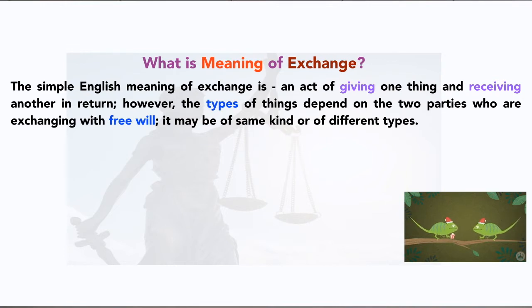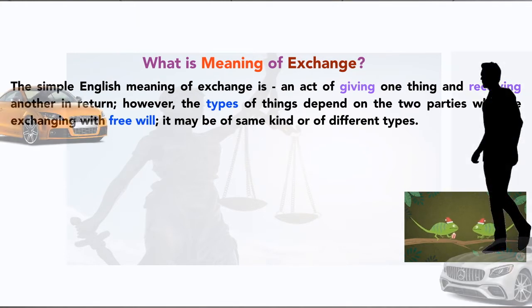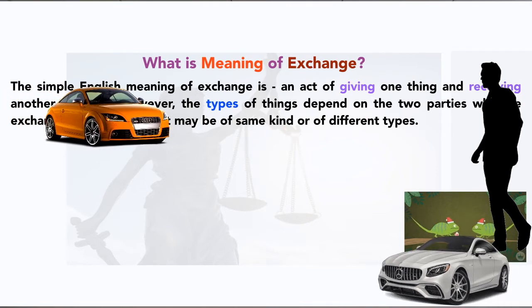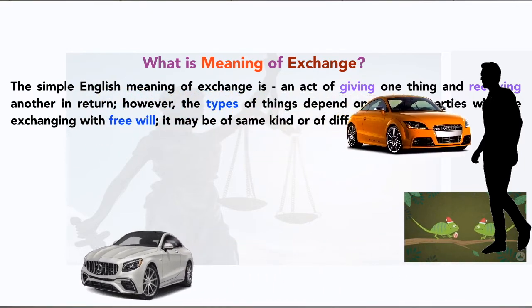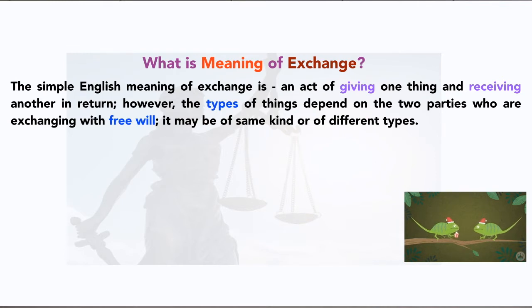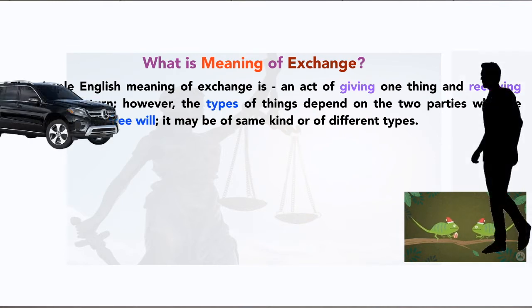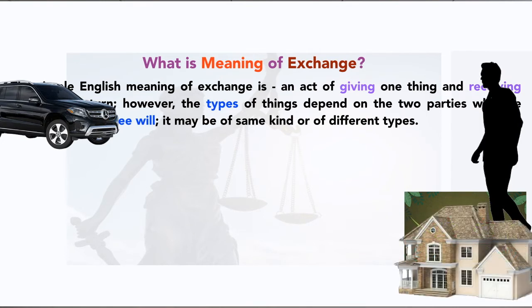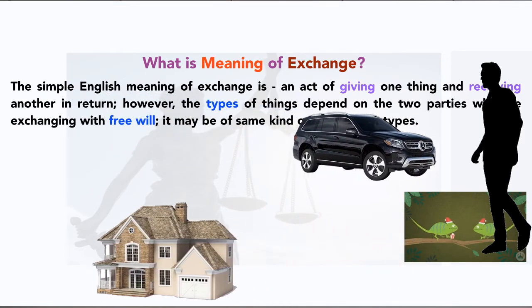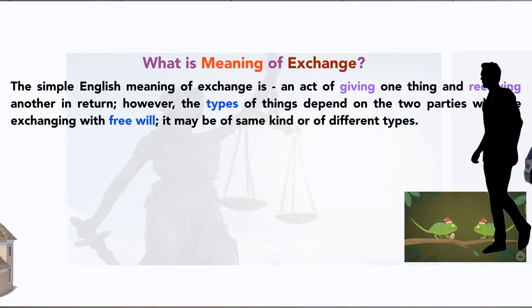Based on mutual agreement or mutual consent, you can exchange things. It may be of the same type — for example, you have a car and your friend also has a car, you like his and he likes yours, so you exchange. Or it may be of different types — say you have an expensive car like a Mercedes worth 50 lakhs and your friend has a flat also worth around 50 lakhs. Both of you agree to exchange: you give your car and he gives his flat.